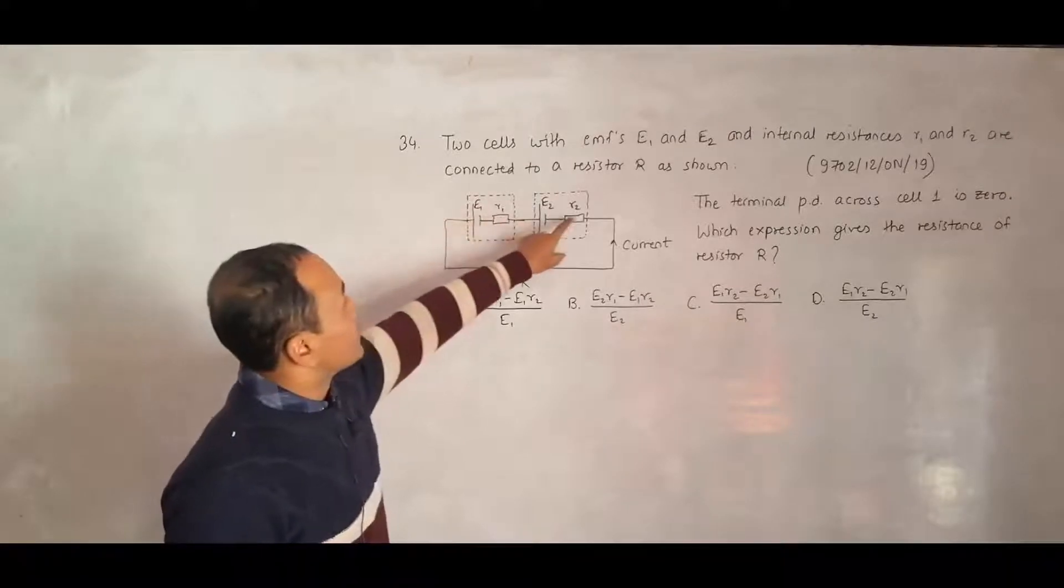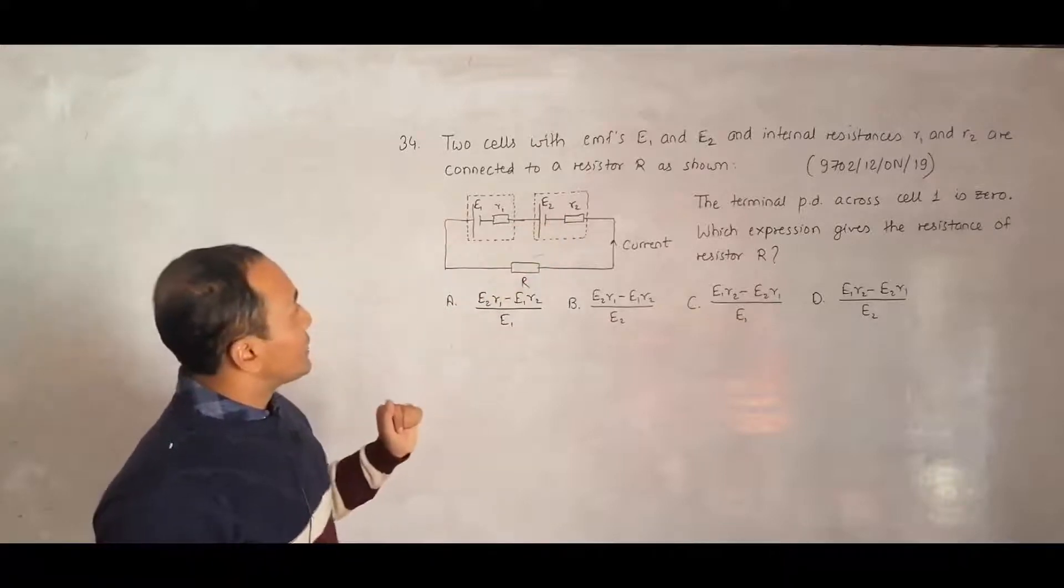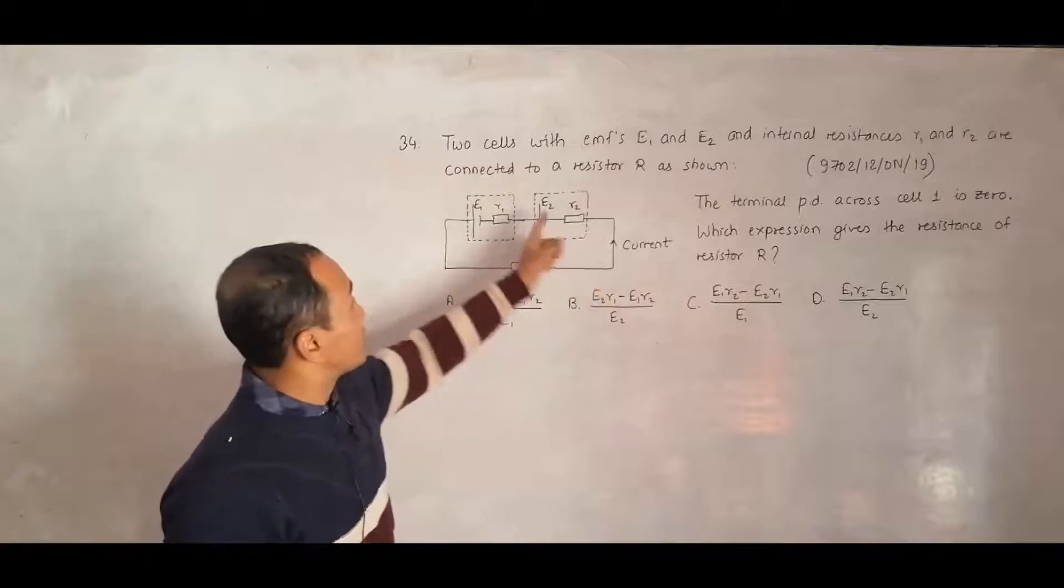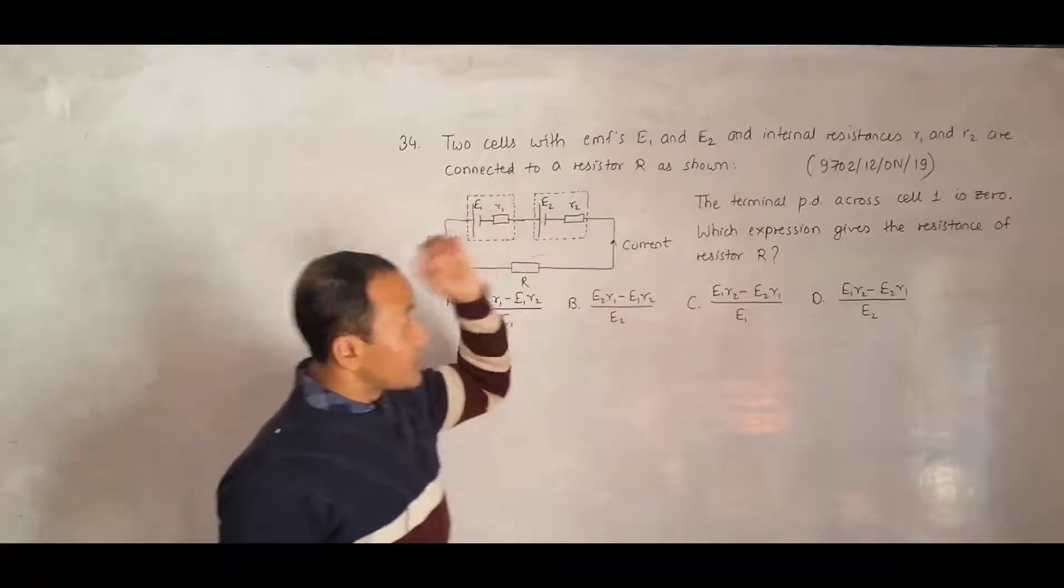This R2 is the internal resistance of E2. With this arrangement, we have resistor R here, current is flowing in this direction. From positive it comes, and it goes like this.